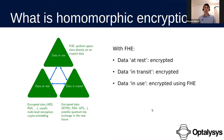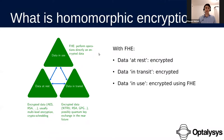Fortunately, with fully homomorphic encryption, we can now do such computations in the cloud, because the main point of FHE is that it allows you to perform computations on encrypted data without having to decrypt it first. Therefore, data can be fully encrypted at all stages — from just after it is collected to just before you're ready to read a result.